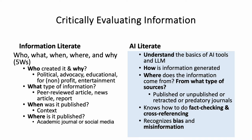An AI-literate person first needs a basic understanding of how large language models and AI tools work: how is the information generated, where is it coming from, and what types of sources is the text generated from? Because ChatGPT, for example, doesn't know the difference between a published and unpublished article, or between a retracted article and one from a predatory journal. Recognizing bias and misinformation and knowing how to do fact-checking and cross-referencing are important information literacy skills that are absolutely translatable to AI literacy.